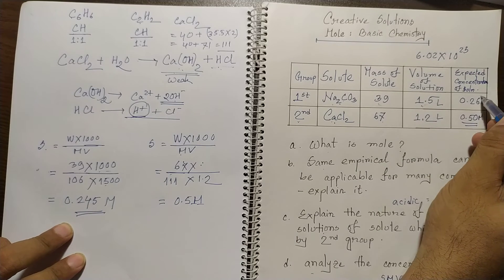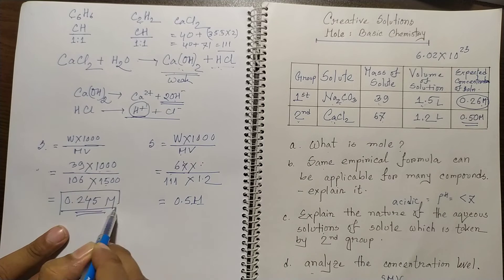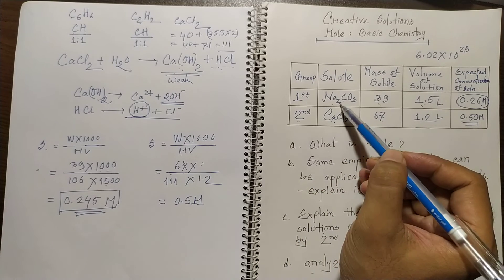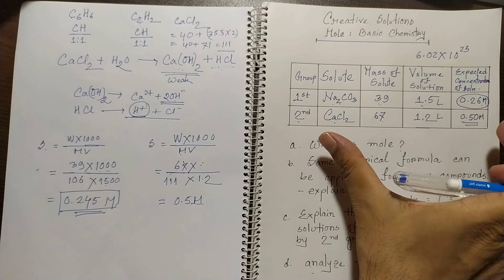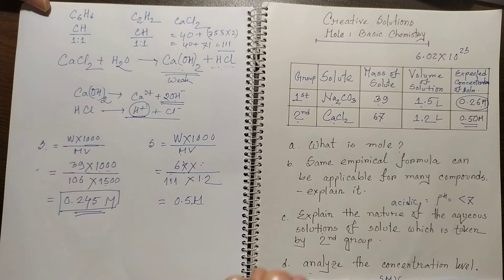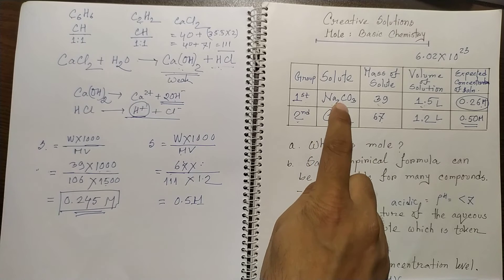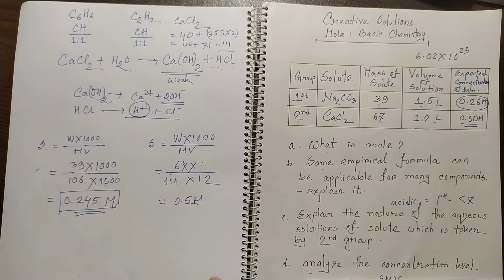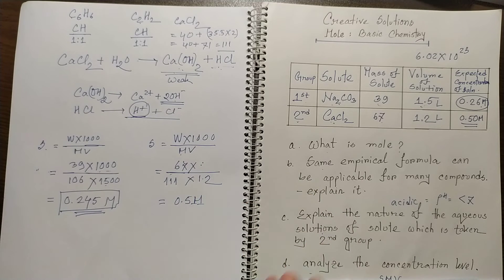The second solute met the expected concentration of 0.5 molar, but the first one did not — it should have been 0.26 molar but the actual molarity calculated was 0.245 molar. So the first group, sodium carbonate, did not meet the expected concentration. These questions came from Dhaka Board 2019. When such data is given in a table, we must consider the molecular mass of the compounds.